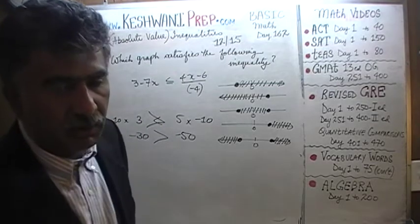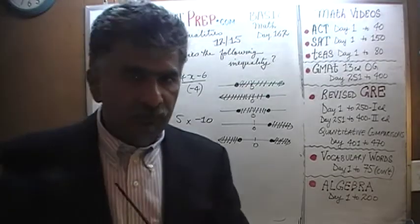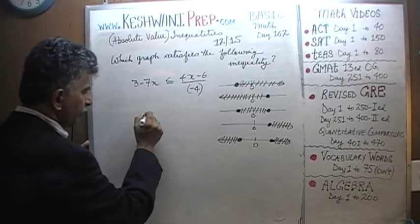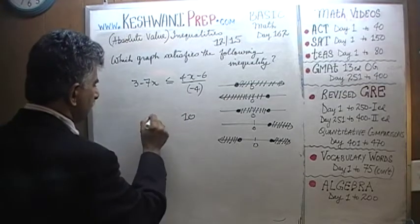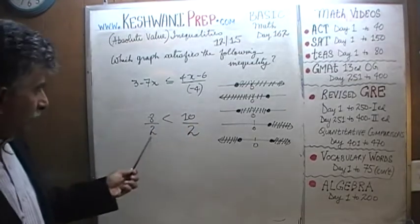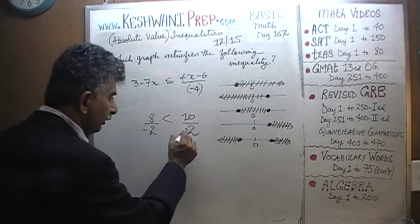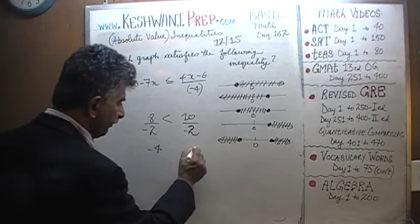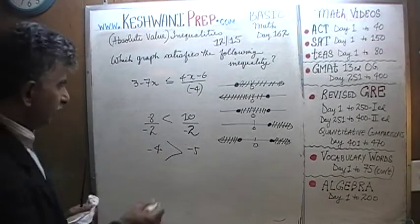Same thing when dealing with inequality: if you divide the two sides of the inequality by a negative number, the direction needs to be switched. For example, would you agree that eight is less than ten? Of course. If you divide both sides by two, then four is still less than five. But if you divide both sides by negative two, then you have negative four and negative five, and negative four is greater than negative five. So the direction of the inequality needs to be switched.